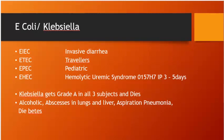E. coli types: EIEC (invasive diarrhea), ETEC (traveller's diarrhea), EPEC (paediatric diarrhea), and EHEC (haemorrhagic diarrhea — O157:H7, incubation 3–5 days, associated with haemolytic uraemic syndrome). Klebsiella causes alcoholic abscesses in liver and lungs, aspiration pneumonia in diabetics.